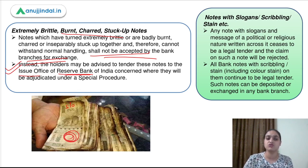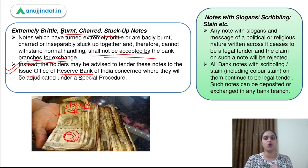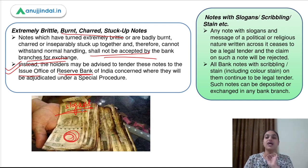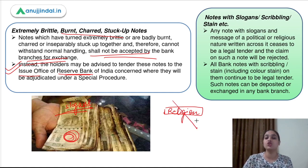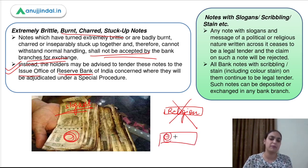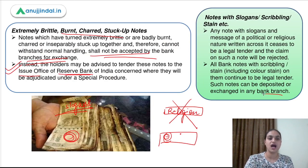If a note has a slogan of religious or political nature written on it, that note ceases to be a legal tender — it can no longer be exchanged. However, if there is just normal scribbling or a stain of ink or color on a note, those notes can still be exchanged at bank branches. The key distinction is between deliberate political or religious messaging versus ordinary marks or stains.